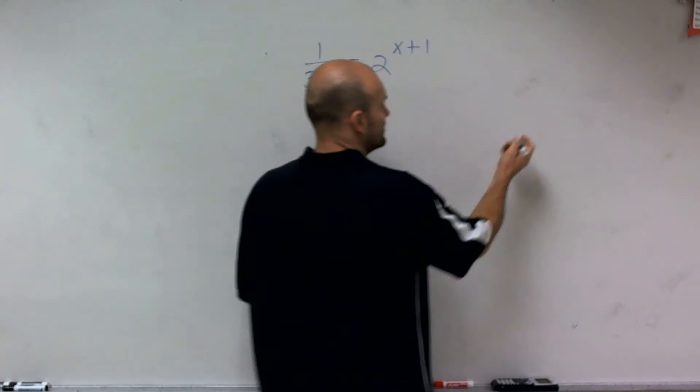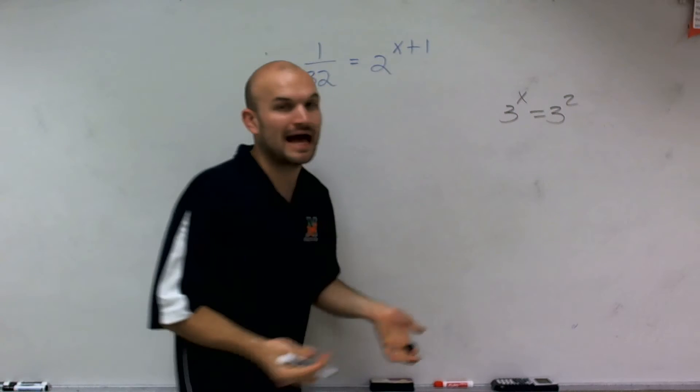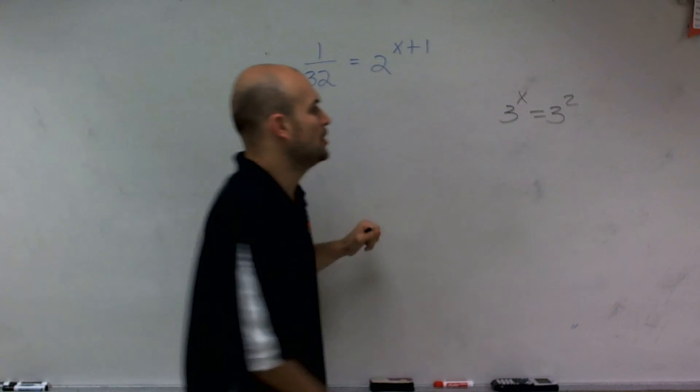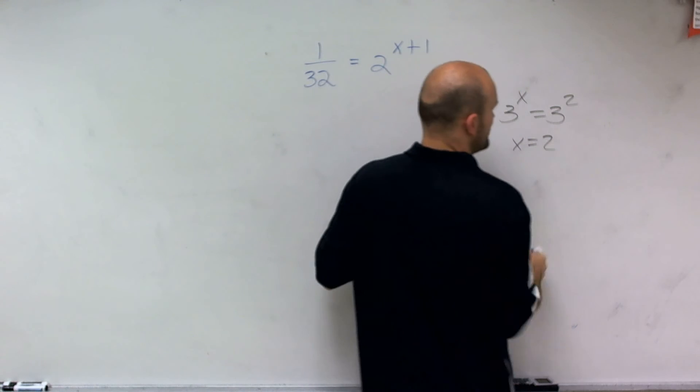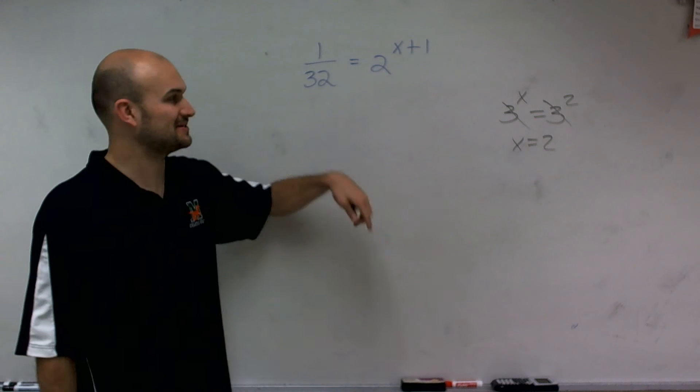We'll just go through the basic rule that I have. Let's say I said 3 to the x equals 3 squared. Well, obviously, if you're saying what does x have to be, you know that x has to equal 2. So therefore, the bases really don't matter as long as they're equal to each other.